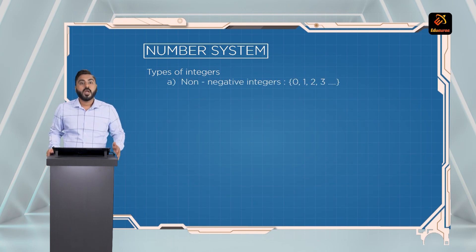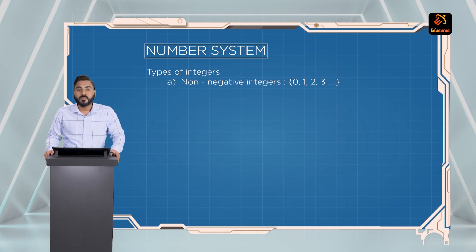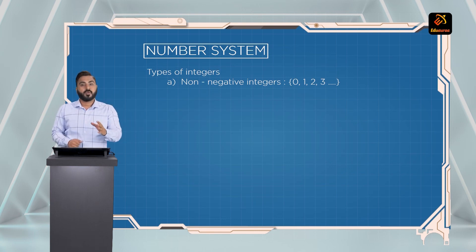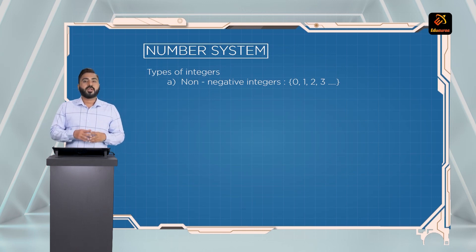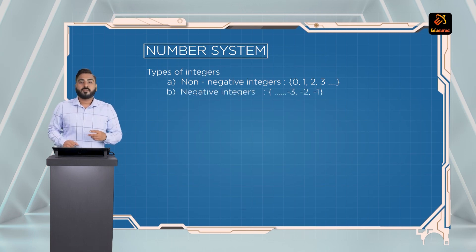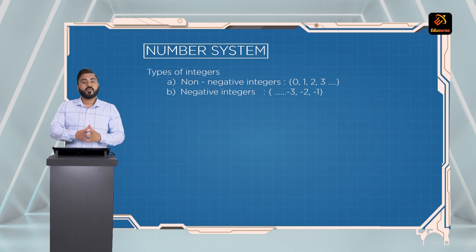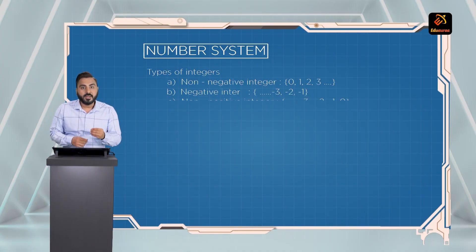The first type is non-negative integers. When we say non-negative integers, that means we remove all negative numbers, and it starts with 0. So 0 up to infinity are basically non-negative integers. Then we have negative integers — in negative integers, we remove all positive numbers including 0. So from -1 up to minus infinity, those numbers are called negative integers.